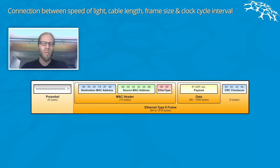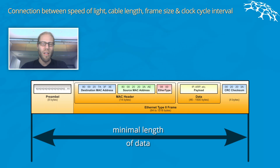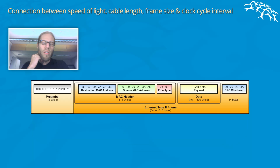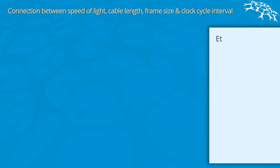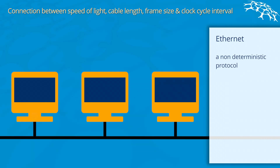Hello, this is Rainey Pickard speaking, and in this video I will explain why an Ethernet frame has to have a certain minimal length. The reason is actually pretty simple. Ethernet is a non-deterministic protocol, which means that any device on the network can start transferring data at any given time.